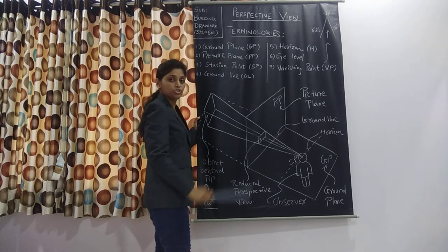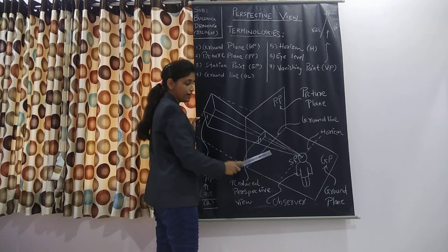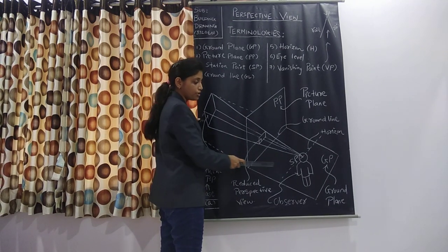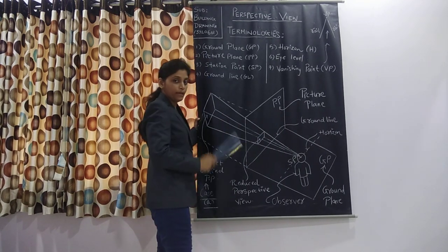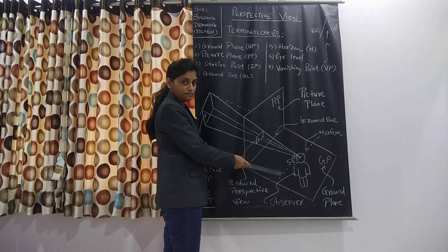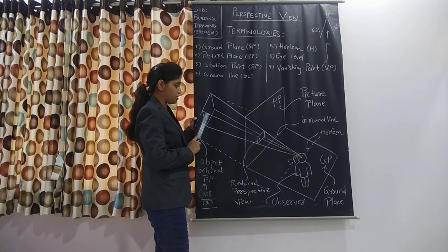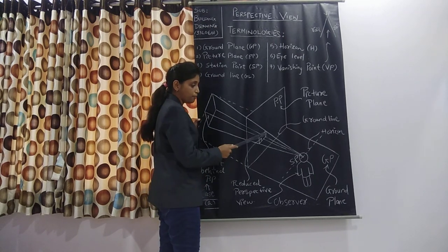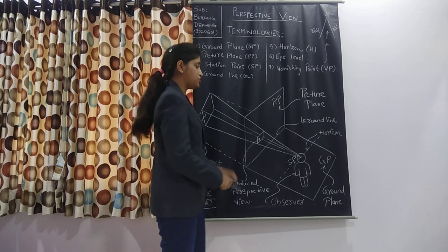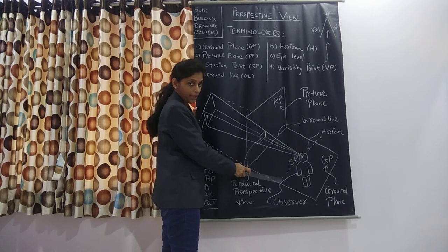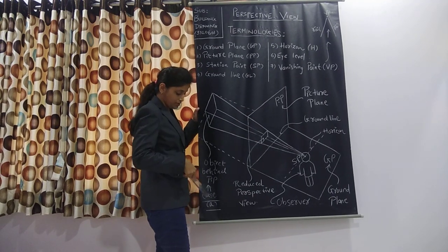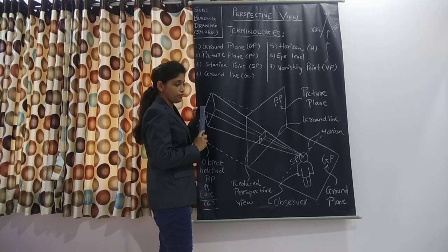The second definition is of picture plane, PP. Picture plane is a vertical plane perpendicular to ground plane, GP. In the figure, I have indicated one vertical plane which is truly vertical and perpendicular to the ground plane, GP, named PP — that is picture plane. In this case, the picture plane is placed in between the object and observer. After applying the projections of the object, the perspective view of the object is obtained on the picture plane itself.